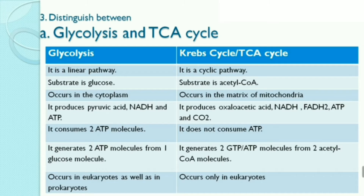Glycolysis produces pyruvic acid, NADH, and ATP, while the TCA cycle produces oxaloacetic acid, NADH, FADH2, ATP, and CO2. Glycolysis consumes two ATP molecules whereas the TCA cycle does not consume ATP molecules. Glycolysis generates two ATP molecules from one glucose molecule; TCA cycle generates two ATP molecules from two acetyl CoA molecules. Glycolysis occurs in eukaryotes as well as prokaryotes.